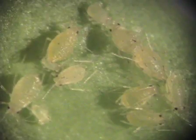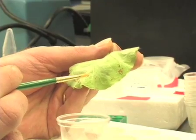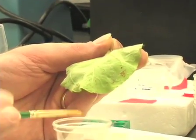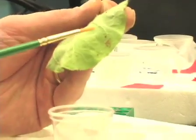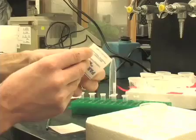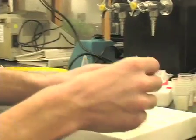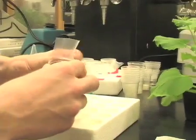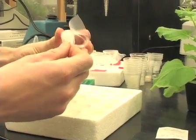When selecting aphids, it's important to choose insects of the same general size and color. Darker aphids such as this one may be older and not appropriate for this experiment. Then I'll stretch the first layer of parafilm over the top of the cup to contain the aphids.